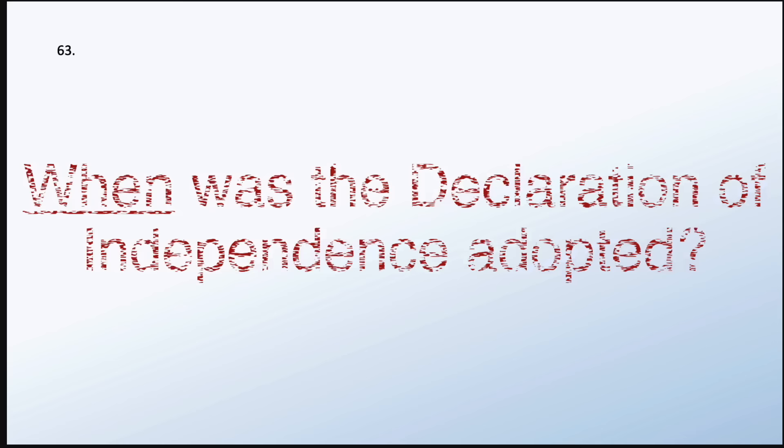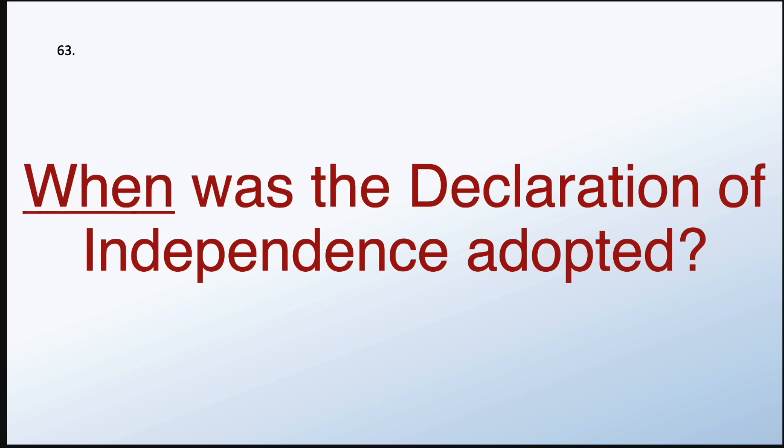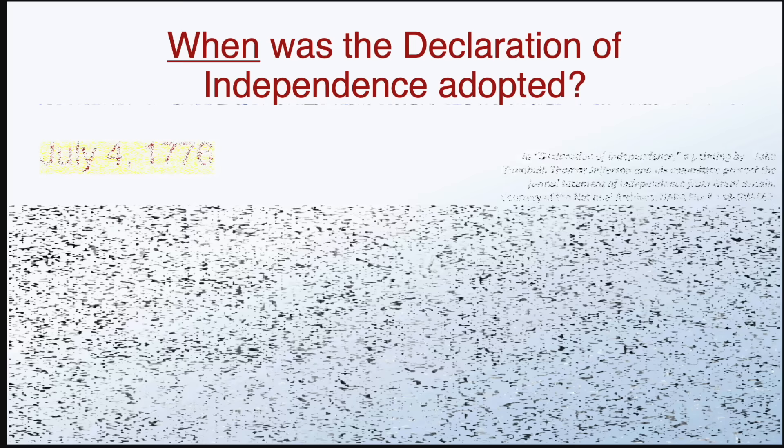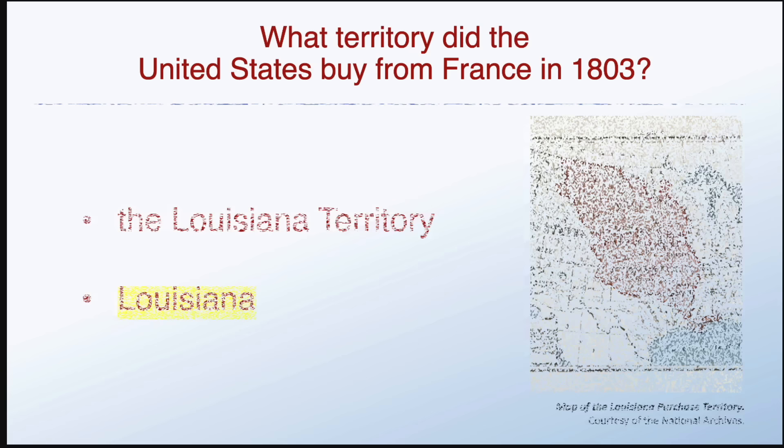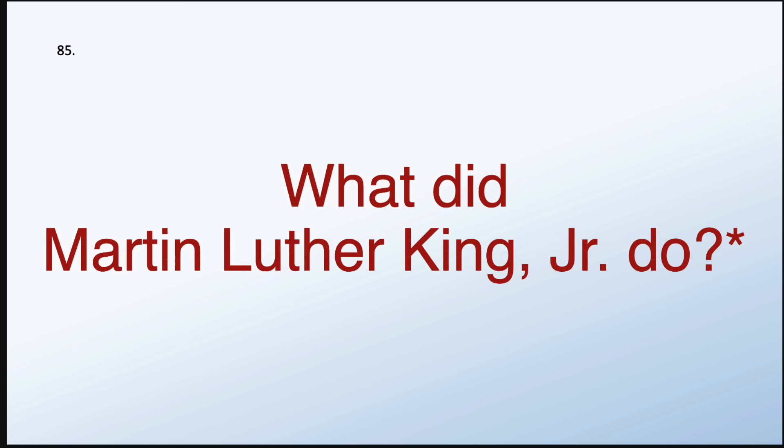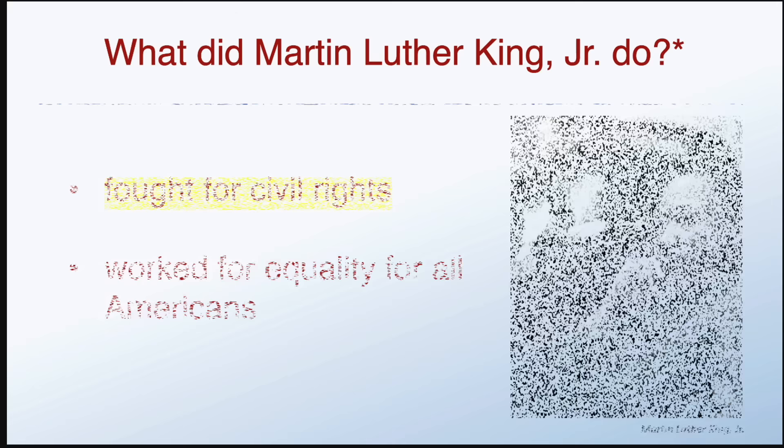When was the Declaration of Independence adopted? What territory did the United States buy from France in 1803? Louisiana. What did Martin Luther King Jr. do? He fought for civil rights.